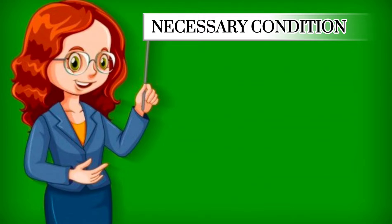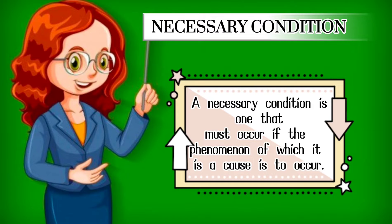Necessary condition. A necessary condition is one that must occur if the phenomenon of which it is a cause is to occur. That is to say, if x, the independent variable, is a necessary condition of y, the dependent variable y will never occur unless x occurs.